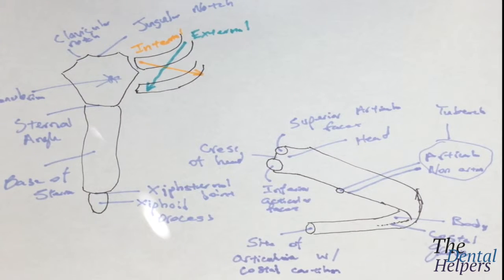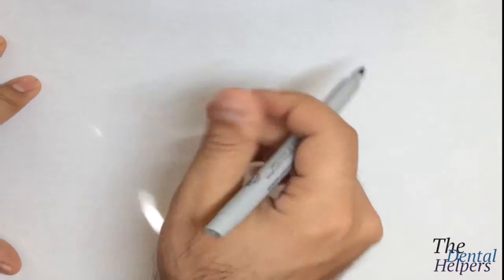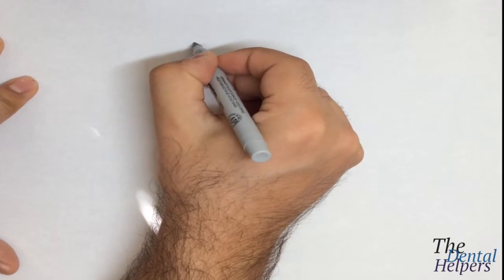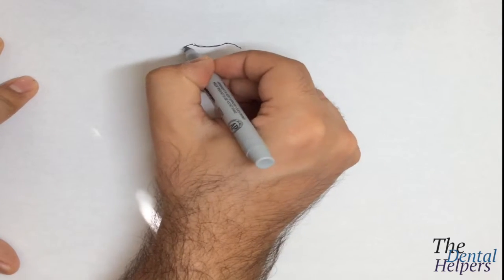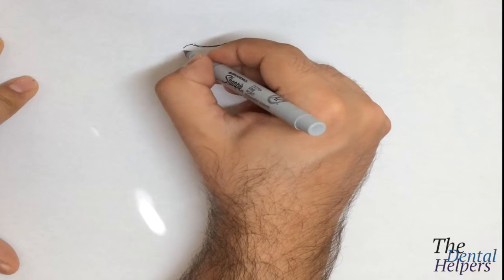So those are all the parts of the sternum and the rib itself. Now if we want to look at what's going to supply the ribs with blood — the arterial system — there are a couple different arteries that are going to pass through.